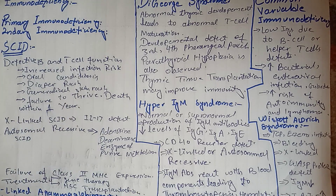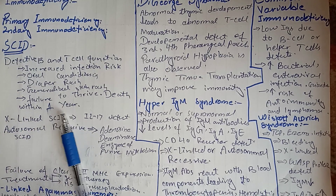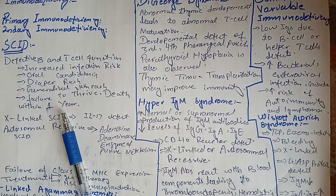The generalized skin rash is observed to be due to maternal antibodies that cross the placenta and enter the baby, leading to a representation similar to graft-versus-host disease. There is failure to thrive, and since there is no humoral or cell-mediated immunity, death usually occurs within the first year of life.